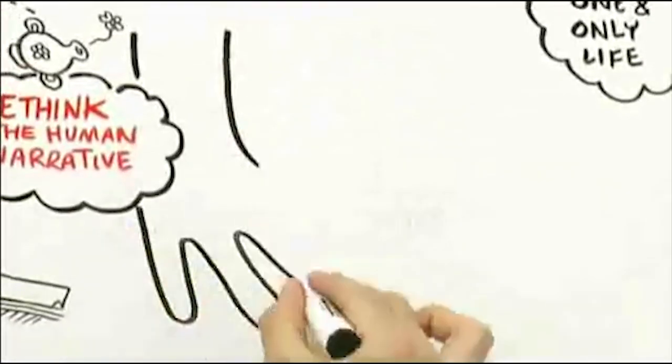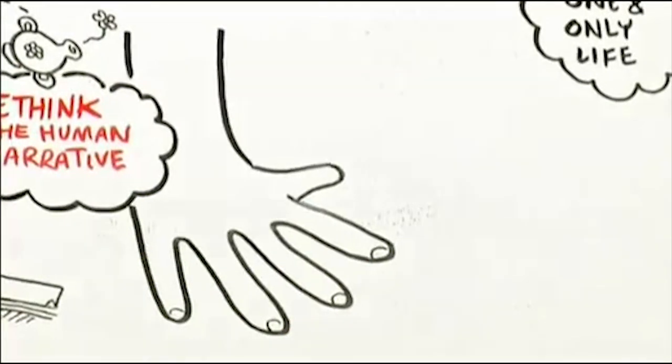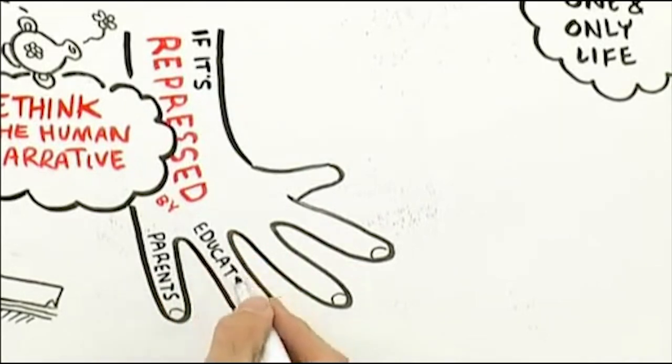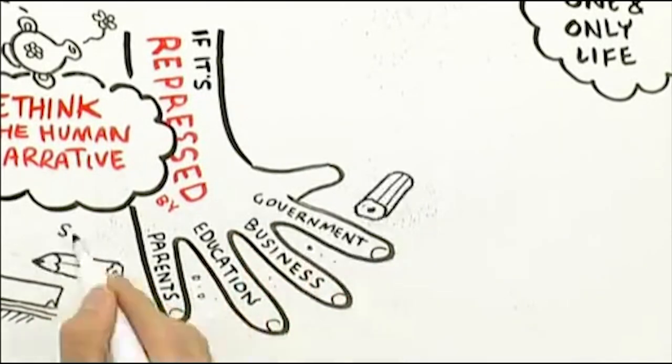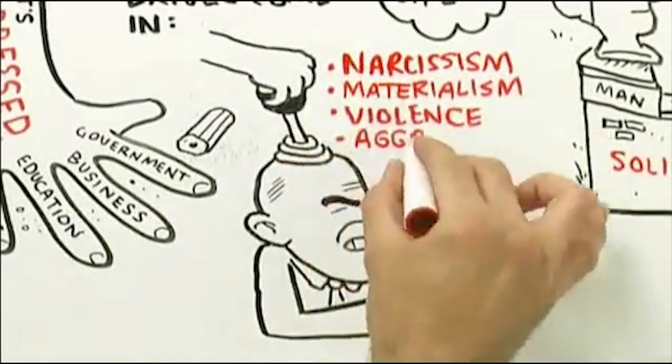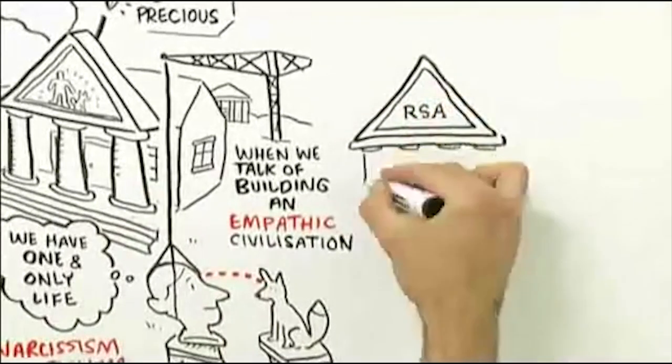If we are truly homo empathicus, then we need to bring out that core nature. Because if it doesn't come out and it's repressed by our parenting, our educational system, our business practice in government, the secondary drives come. The narcissism, the materialism, the violence, the aggression.